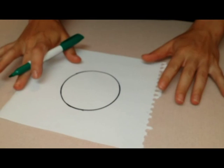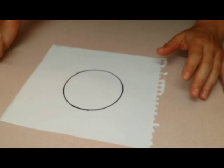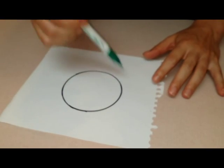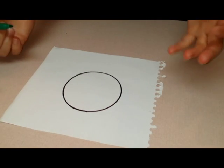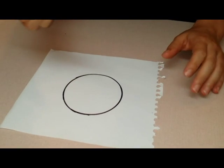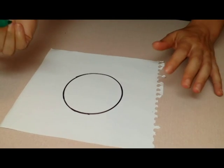So you want to know how to streak to single colonies aseptically. Pretend that this black circle is your petri dish full of agar and that this green marker is your inoculation loop.